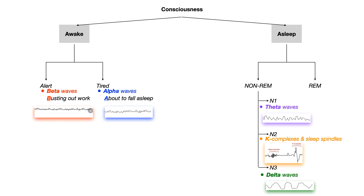Sleep spindles and K complexes are both seen in N2, or non-REM stage 2. And then finally in N3 you see delta waves - shown in green is what the delta wave looks like. REM is its own stage and is characterized by beta waves - the same waves you see in the awake alert stage. Because of that, REM stage is called paradoxical sleep, because even though you are in this very deep state of sleep, it has the same EEG waveform as when you're awake.